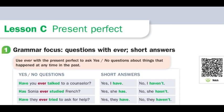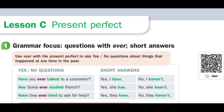Hi everyone. Thank you so much for watching Adults ESL Online Learning. I'm Dr. Hernandez Smit, and this is Lesson C from Ventures Level 3. The grammar focus is: questions with 'ever' and short answers. Use 'ever' with the present perfect to ask yes/no questions about things that happened at any time in the past.